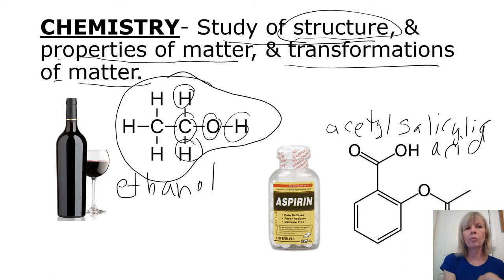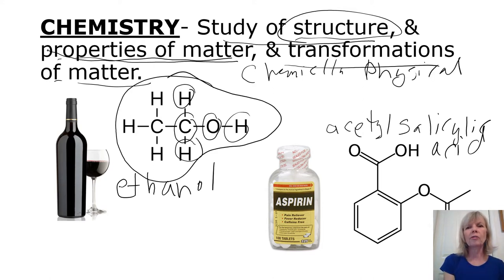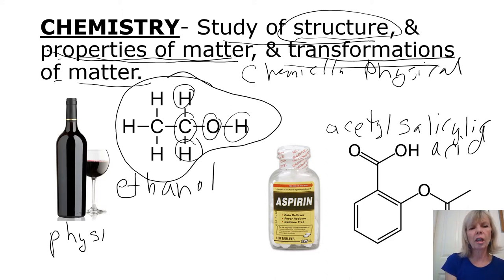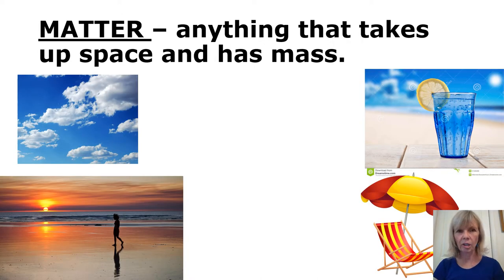Properties of matter we'll be learning about in this chapter — both chemical and physical properties of matter. Transformation means change of matter, so we'll also be learning about physical change and chemical changes later on in this chapter. The definition of chemistry is the study of the structure, properties, and transformation of matter.